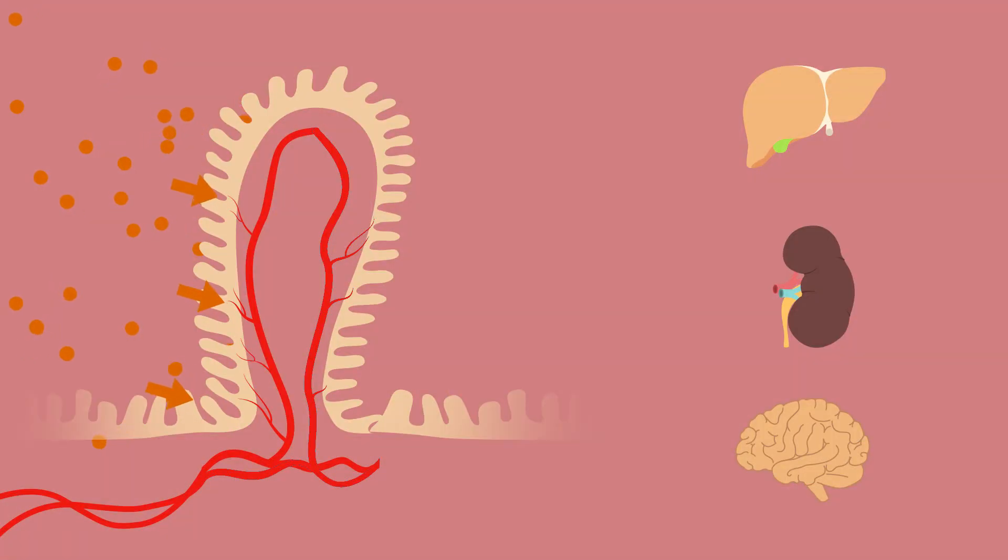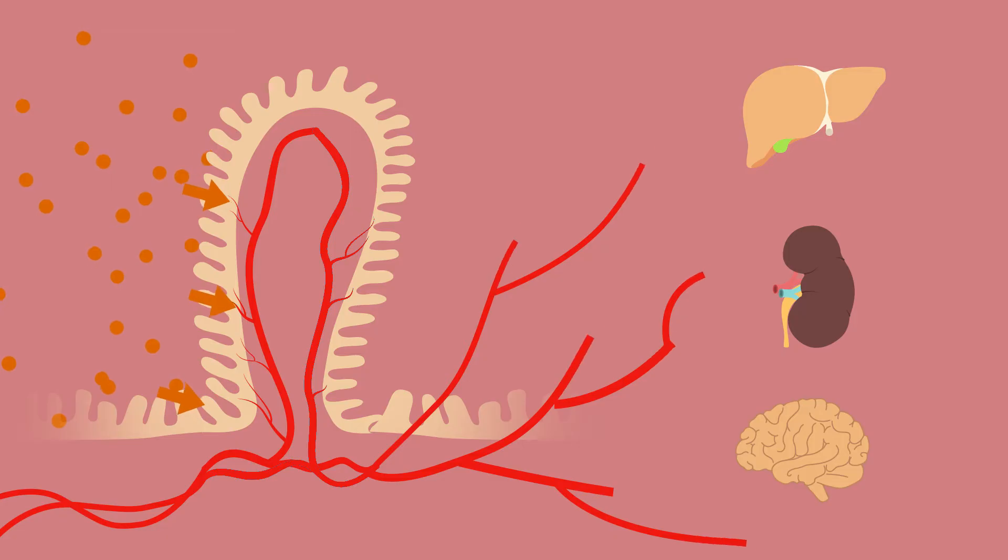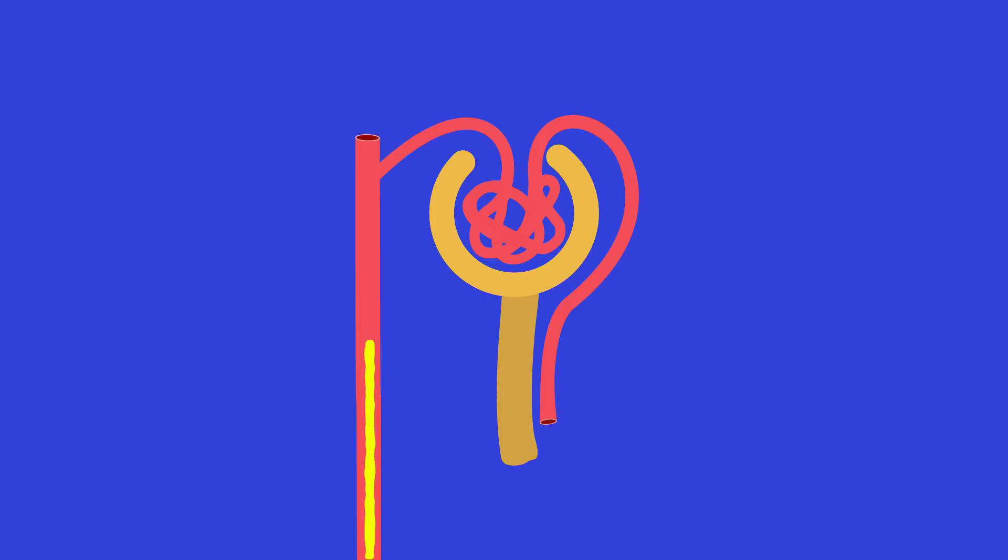So what happens once the substances have diffused into the body? Well, they need to be transported around to get them to where they are needed quickly. Even waste products like carbon dioxide and urea also need to be transported around the body.